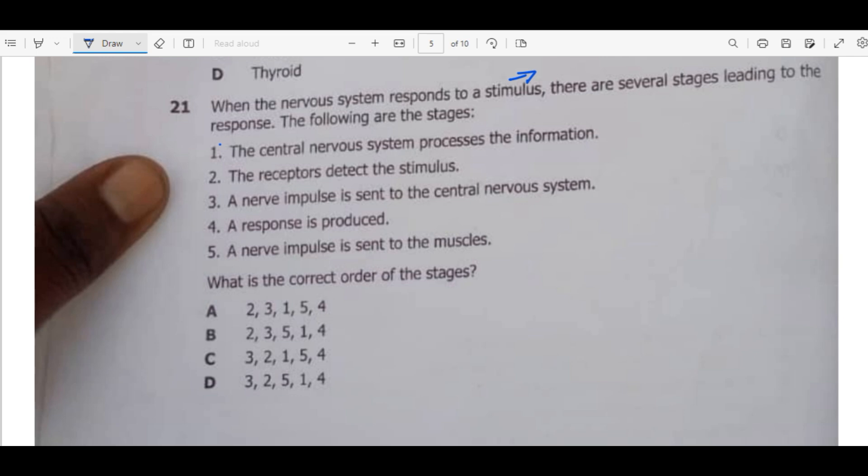Now let's look at the question. What is the correct order of the stages? The question is asking us to arrange what must be the first one. So the first one has to do with the receiving of the information from the environment. So the first one is 2, this is our first one here since we can see that the receptors detect the stimulus. The receptors are sense organs like the skin. Whenever you touch something that is hot, the skin will act as a receptor. It will detect the information from the stimulus. The heat will act as a stimulus. Then after the information is detected, the information must be sent to the central nervous system. The central nervous system consists of the brain and the spinal cord.